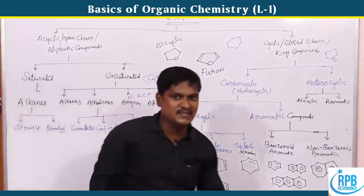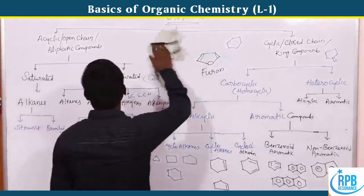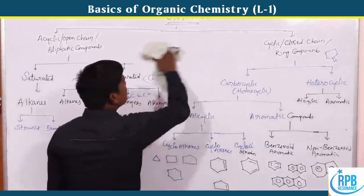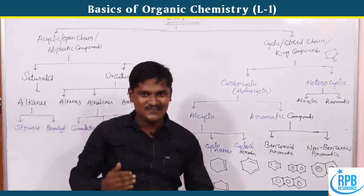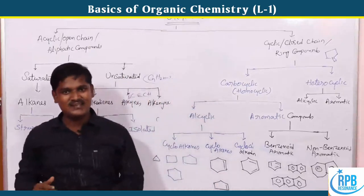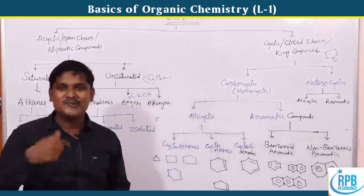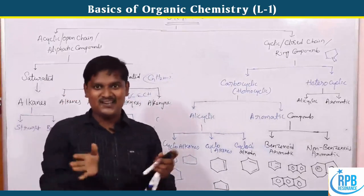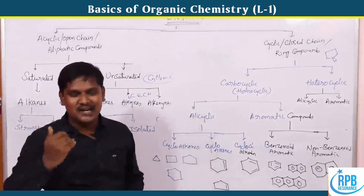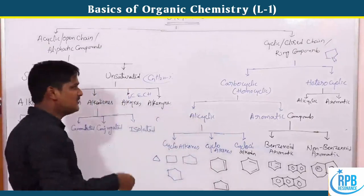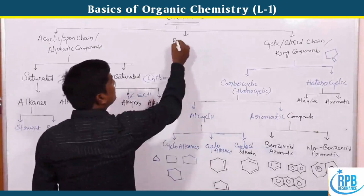This is the classification of cyclic compounds. In general, we have alicyclic compounds and cyclic compounds. But there is also a third part — polycyclic compounds, which we will include for advanced understanding.